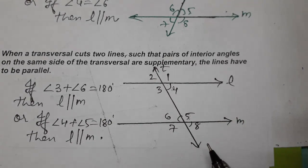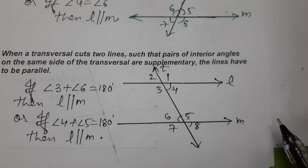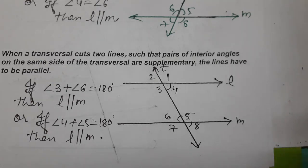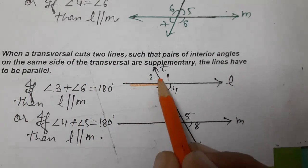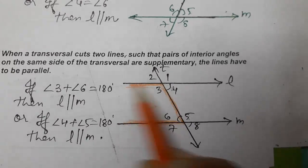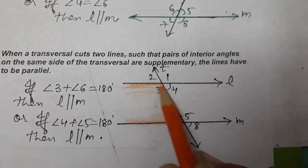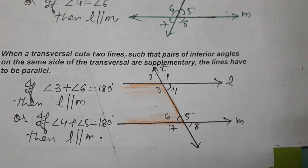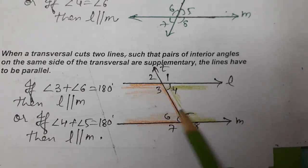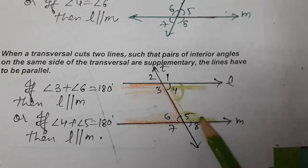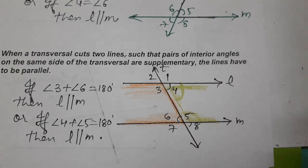So there are three cases we have studied. If any pair of corresponding angles is equal, lines are parallel. Or, if any pair of alternate interior angles is equal, then the lines are parallel. And the last one: if a pair of interior angles on the same side of the transversal are supplementary — their sum is 180 degrees — then the lines are parallel. I hope children that you understood the topic checking for parallel lines. Thank you so much for watching the video.